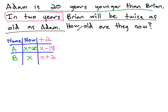Let's make an equation to represent this. Brian, we'll use B for him, will be, that's a conjugation of the verb to be, just like is, equals twice, which is 2 times Adam.